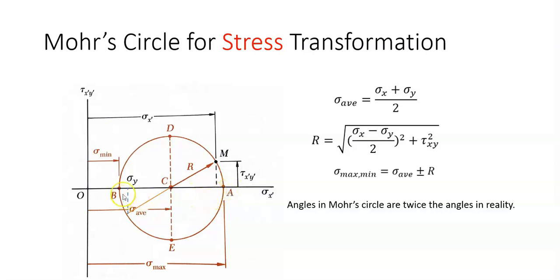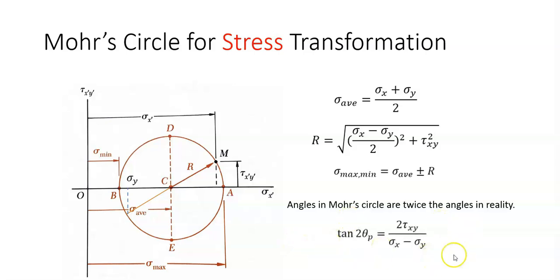Notice that at points A and B, we don't have any shear stress — shear stress is zero. The plane that passes through these two points is called the principal plane. The normal stress at point A, which is the maximum stress, and at point B, which is the minimum stress, are the principal stresses. The angle of the principal plane can be calculated using this equation for theta.